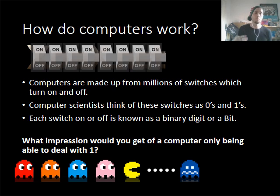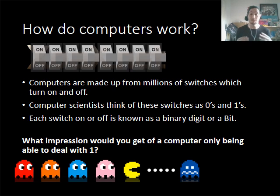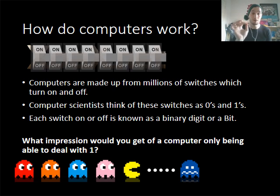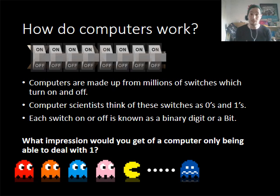The way that computers work is that they're made of millions of switches that turn on and off at such a speed that you can't see it happening. I want you to think about these switches as zeros and ones — these are what we know as a binary digit, a one or a zero. Now if you are asked in an exam what is meant by a bit, it's a binary digit: a switch within the computer represented by a one or a zero.